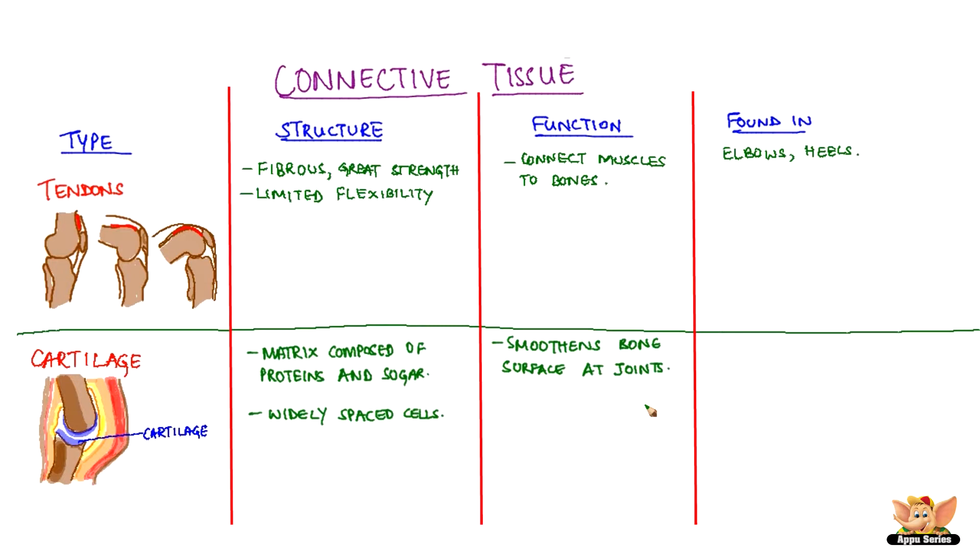Cartilage smoothens bone surface adjoins. Nose, ear, trachea and larynx has cartilage.